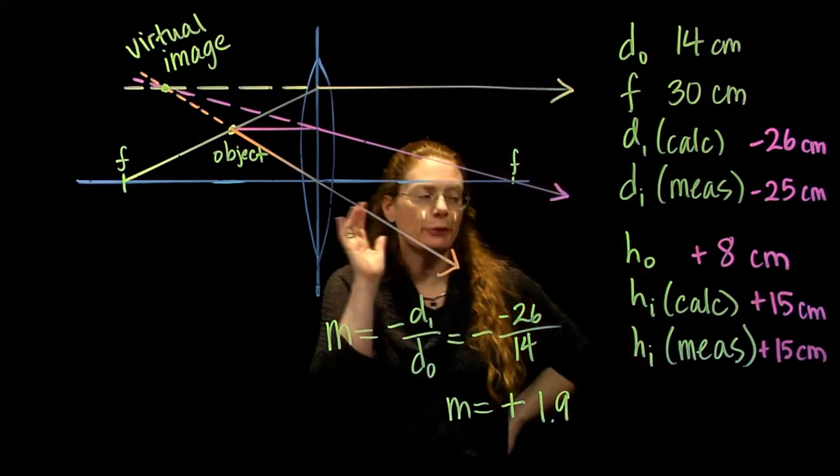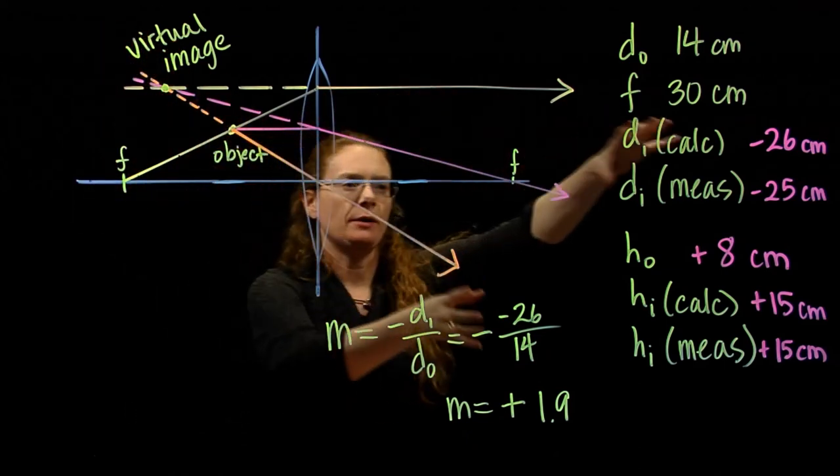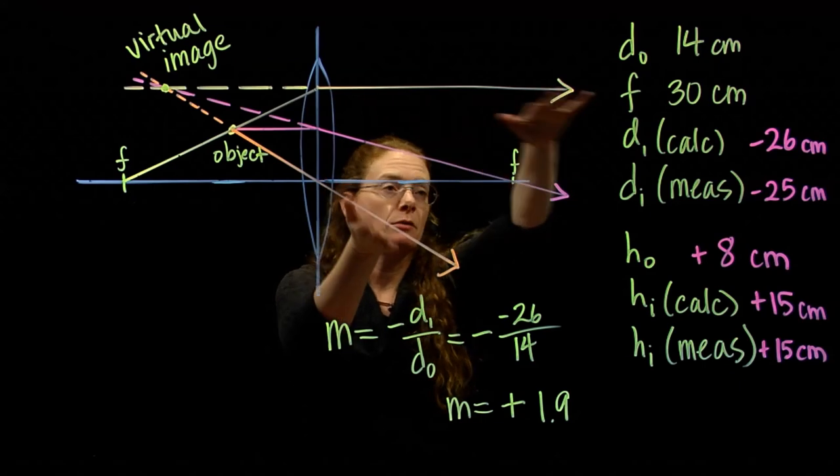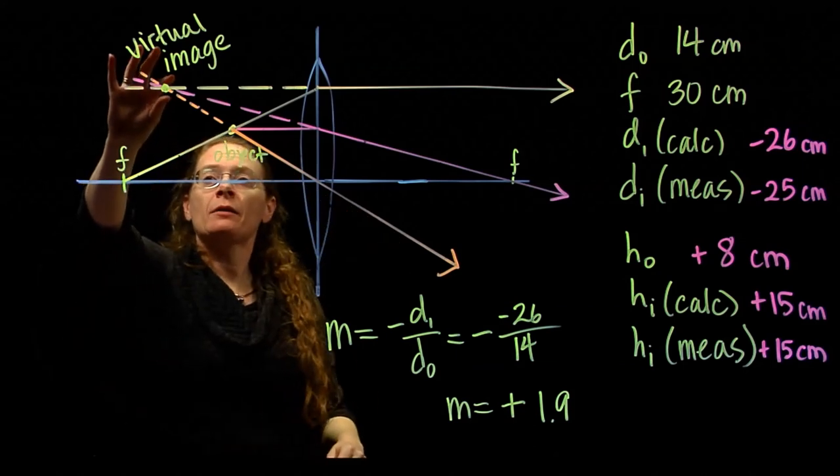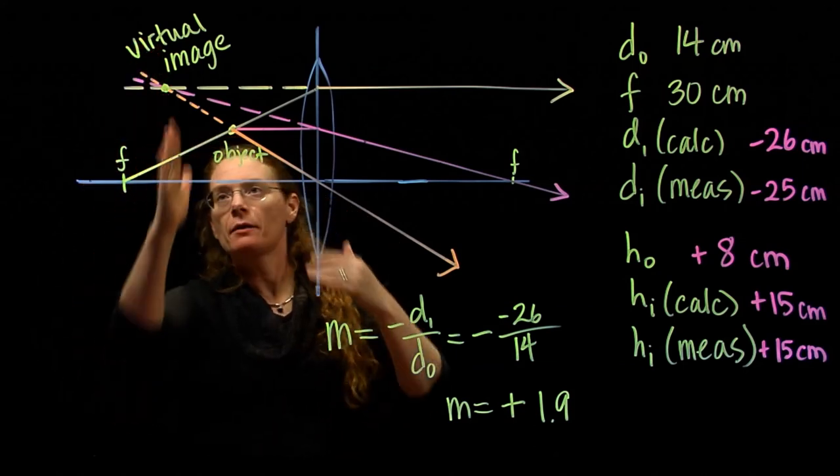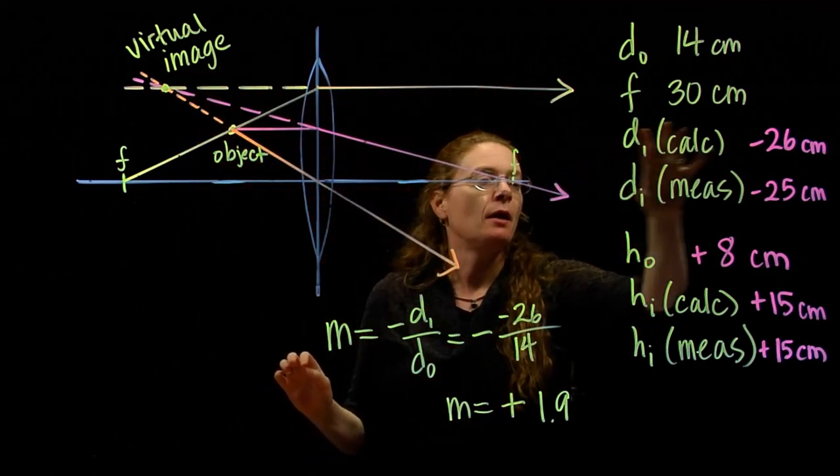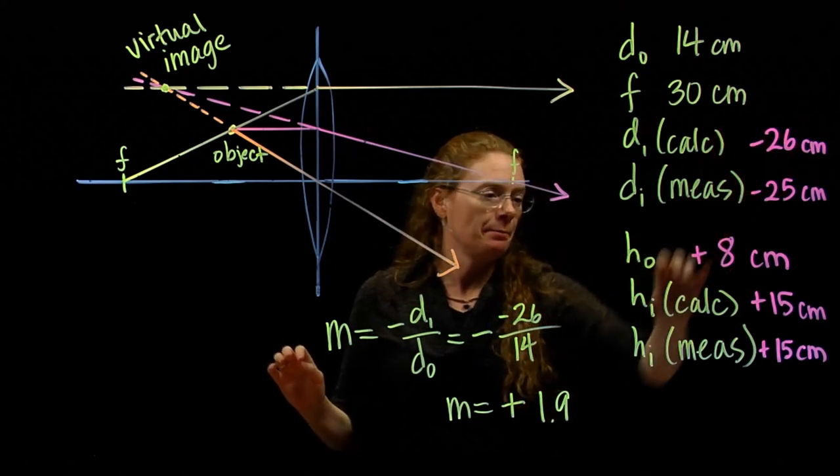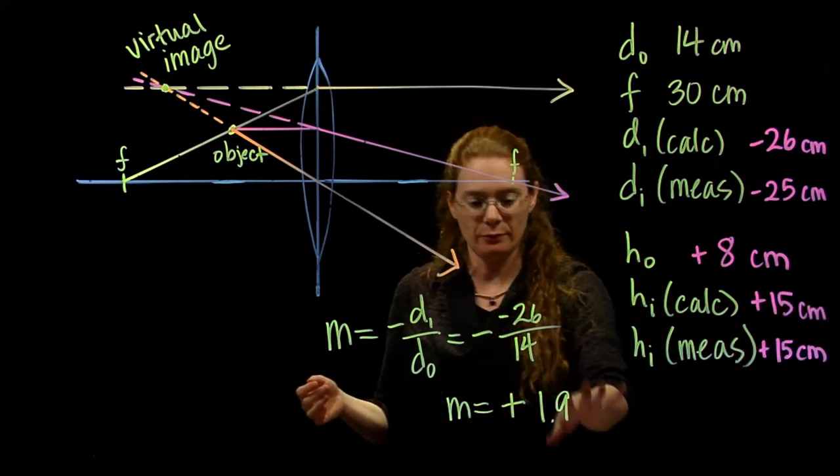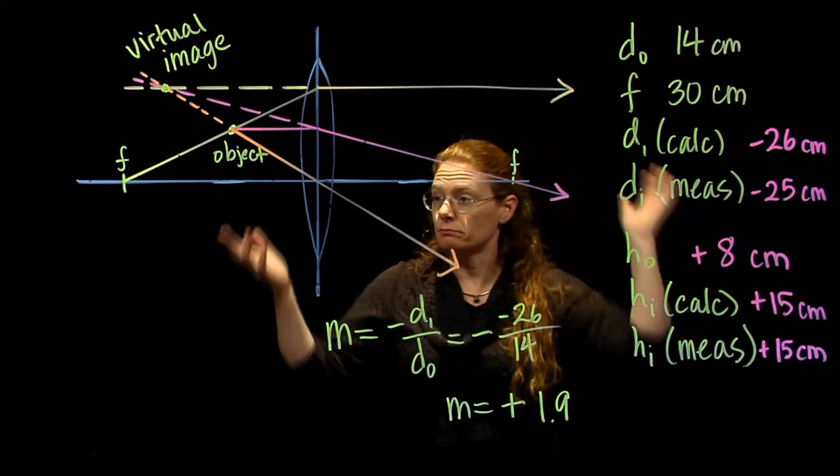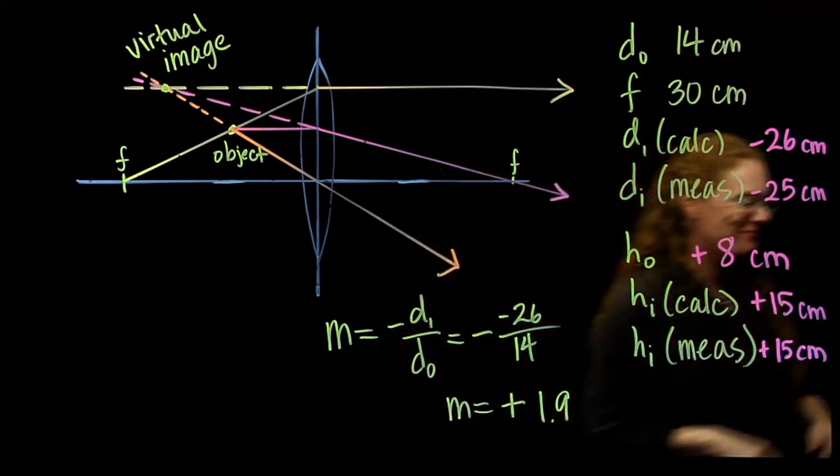It's virtual because the light rays that go through the lens, that get refracted through the lens, don't actually meet here. We have to bring them back and they meet up here, but only in our mind's eye, not on a piece of paper back here. That virtual image means that DI has to be negative, and it is. My calculated and measured image distances are about the same. My calculated and measured image heights, about the same. Magnification makes sense in terms of the positive and the number. And so we've got it. We're done. So there's converging lenses, virtual images. Good job.